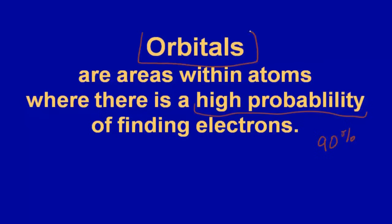Before we go any further, let's talk about the word 'orbitals.' It's an unfortunate word — it comes from the word orbit, which came from Bohr's idea that electrons orbit the nucleus like planets orbit the sun. The word 'orbitals' often creates a misconception with students, making them think that electrons orbit the nucleus, and they do not. We can only know with 90% probability where an electron might be, but not the path it's taking. That comes from Heisenberg's uncertainty principle.